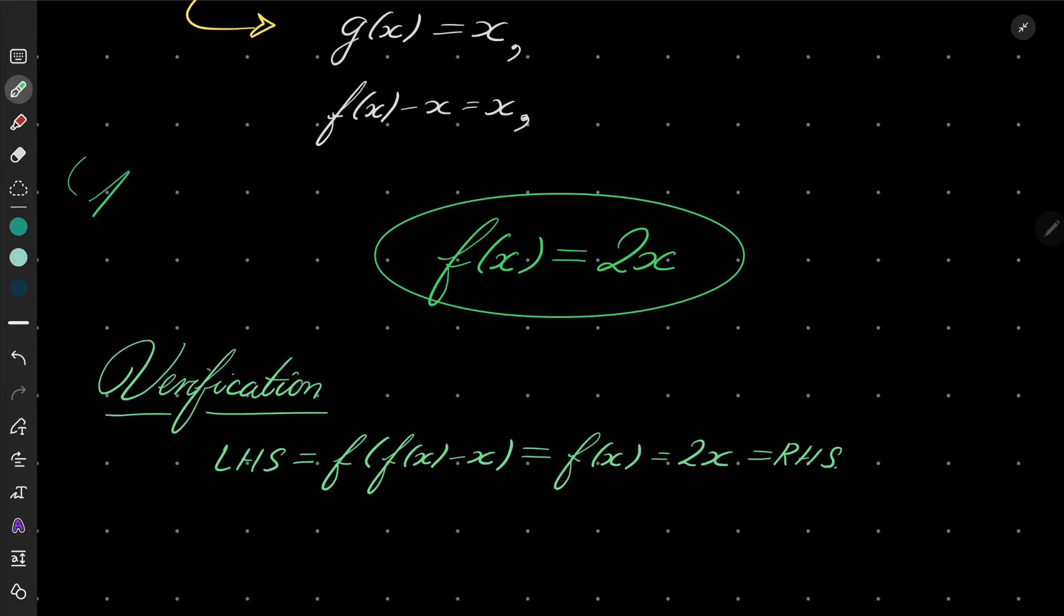So it equals the right-hand side of our original equation. In fact, we have only one solution. The only solution is the function f(x) = 2x for positive numbers x. And that closes our problem. Thank you for watching, and I will see you next time. Goodbye.